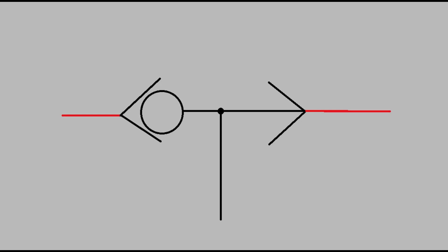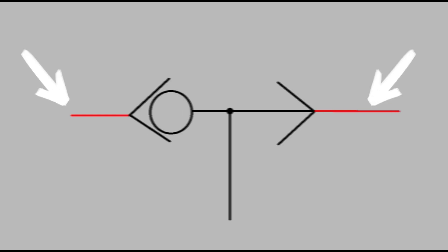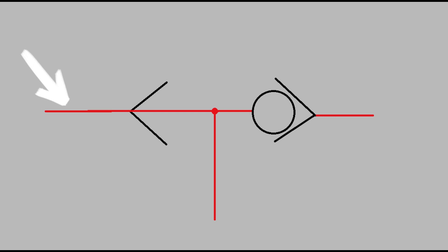A shuttle valve receives two pressure signals. These signals work against each other with the higher pressure signal winning out and moving a check valve over to allow the higher pressure signal to pass through the output.